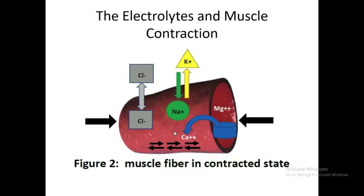During muscle contraction, there is a high influx of calcium to muscle cells. Magnesium is needed afterwards for muscle relaxation. Sodium, potassium, and chloride also participate — during contraction, sodium moves into the cell and potassium moves out.